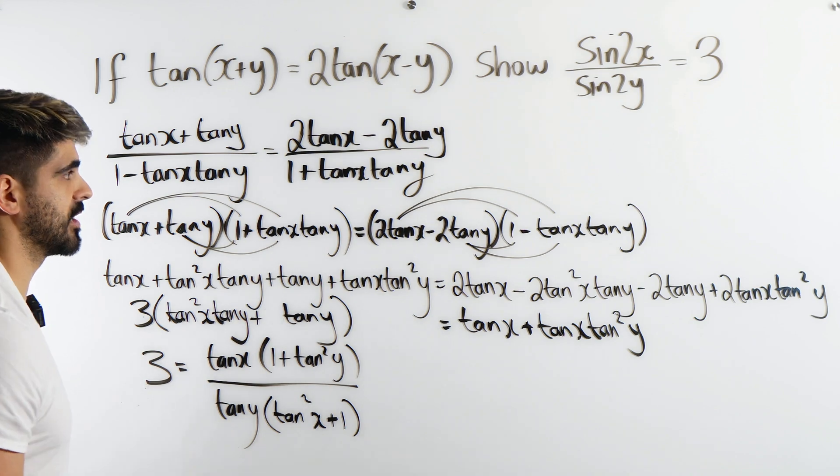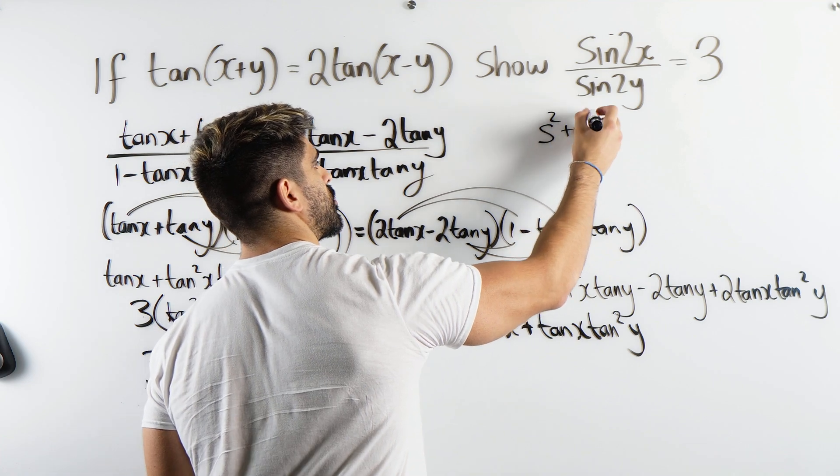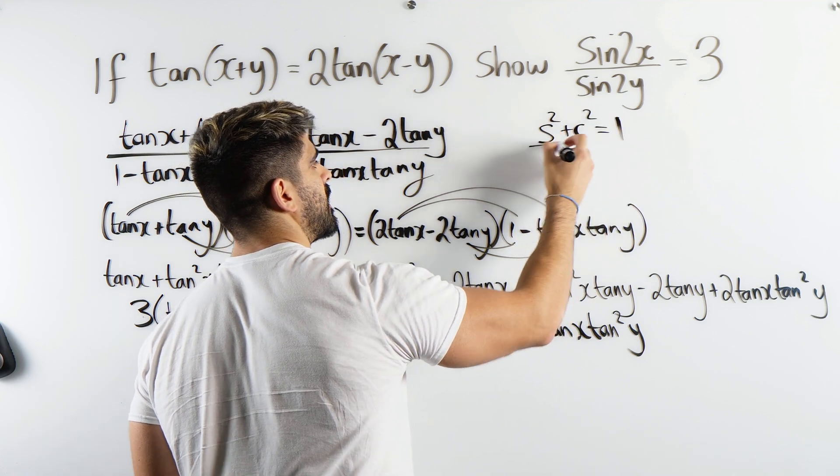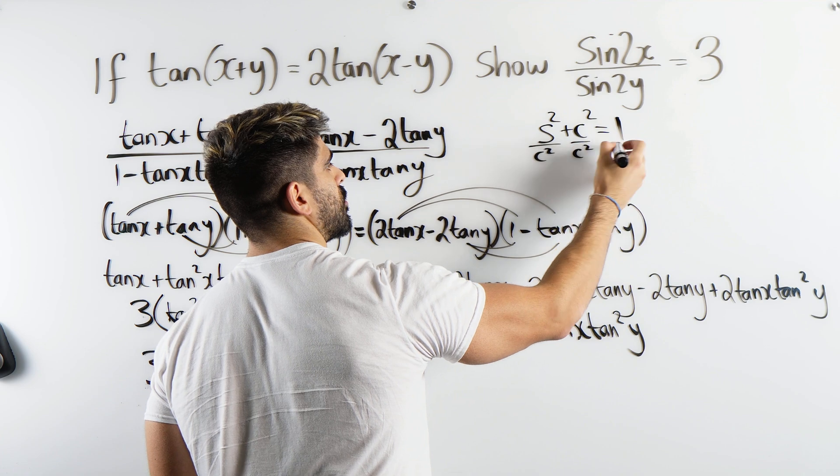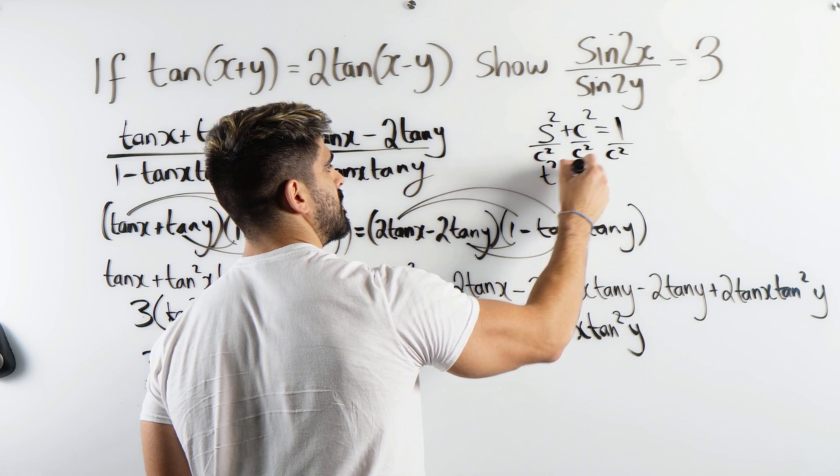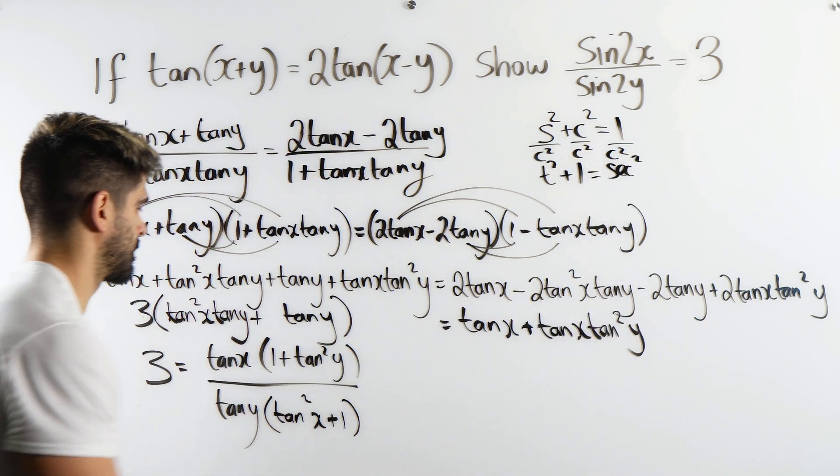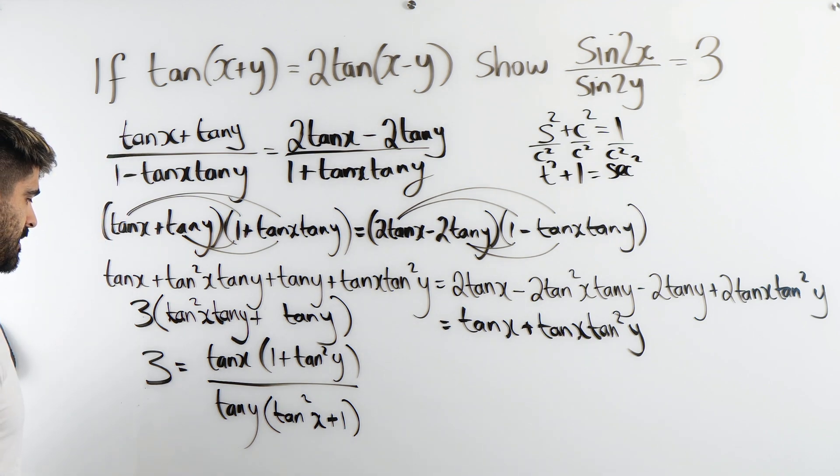That is an identity in itself and I can prove it to you very quickly. We know sine squared plus cos squared is 1. If I divide through by cos squared, sine over cos is tan squared plus 1 is sec squared.